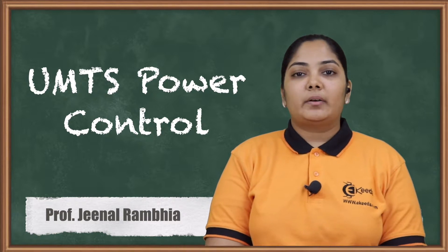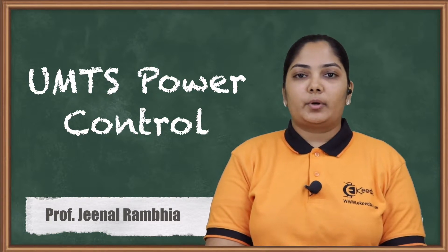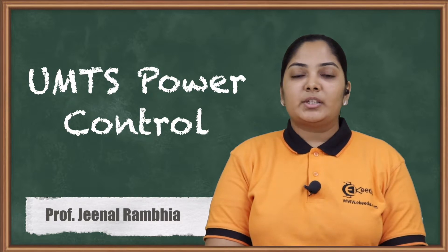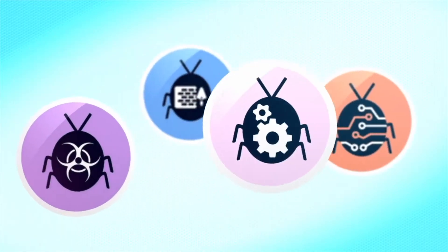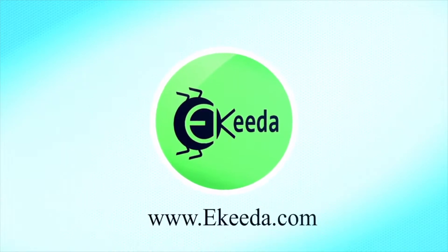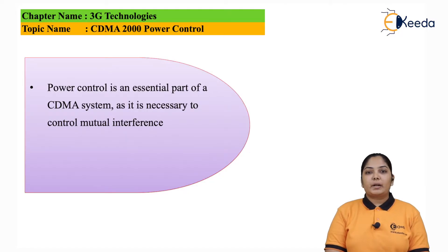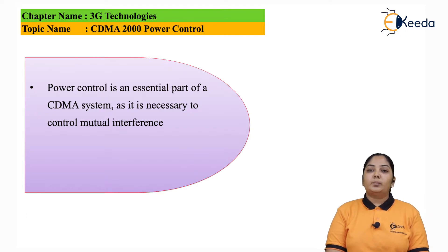As we know, CDMA needs power control because of the near-far problem. Hence, WCDMA being the advanced version of CDMA, power control is also required. Power control is an essential part of the CDMA system as it is very necessary to control the mutual interference. Mutual interference means that the mobile phone transmitting higher power should not overlap the mobile phone transmitting with lower power. Hence, power control is important in both uplink and downlink of the mobile phone system.